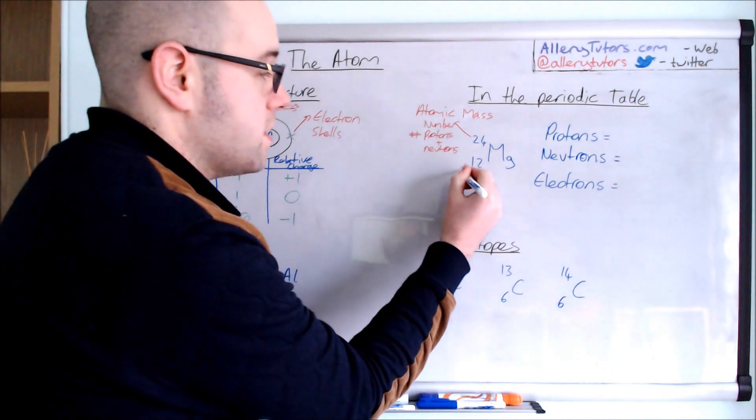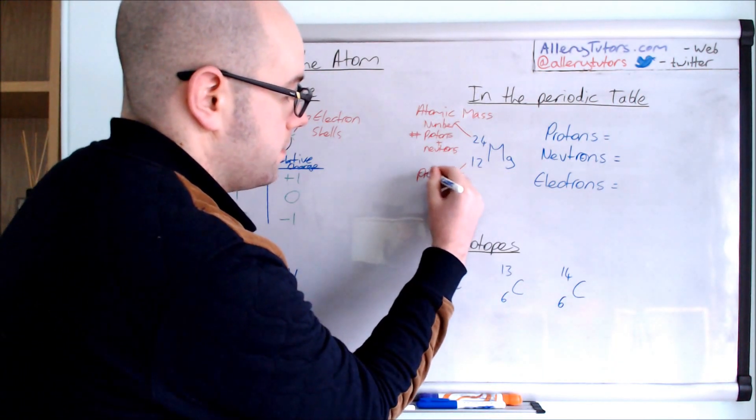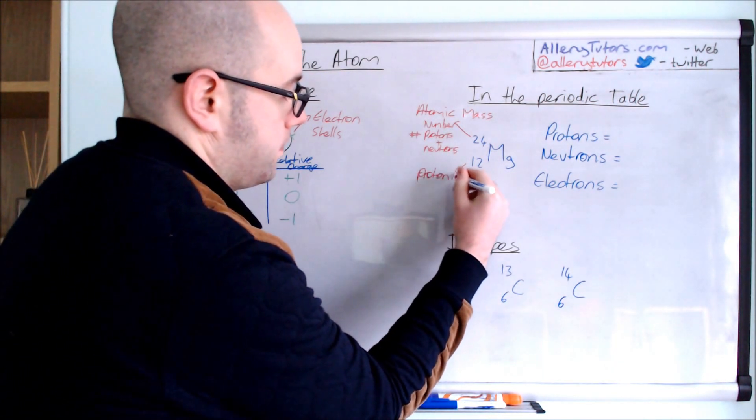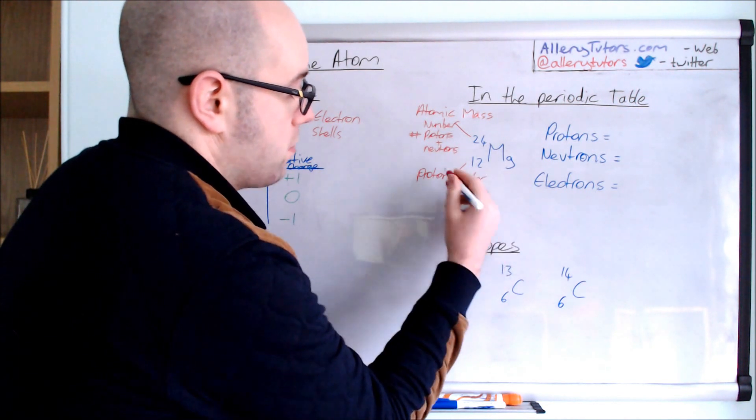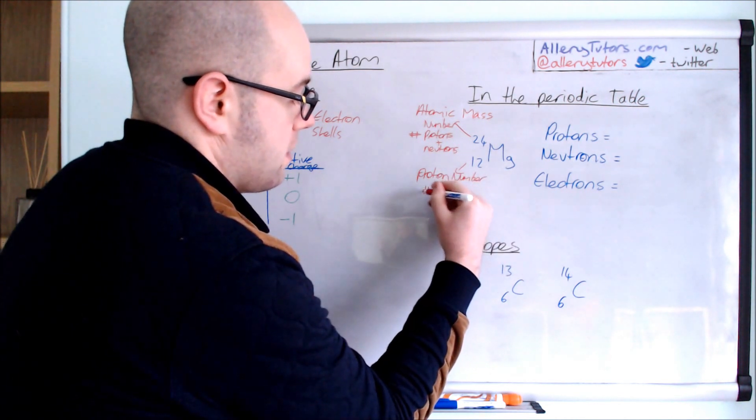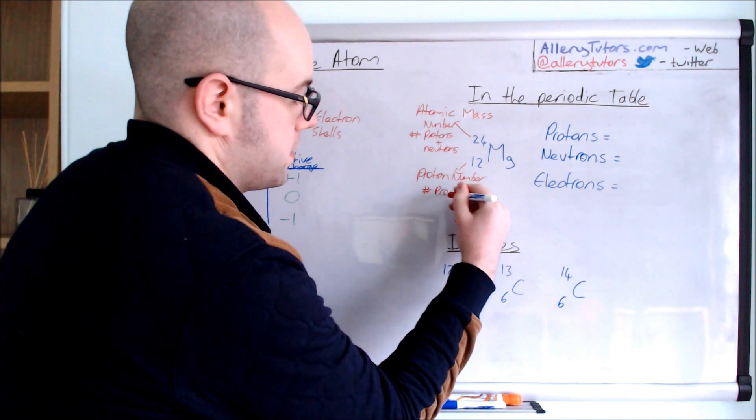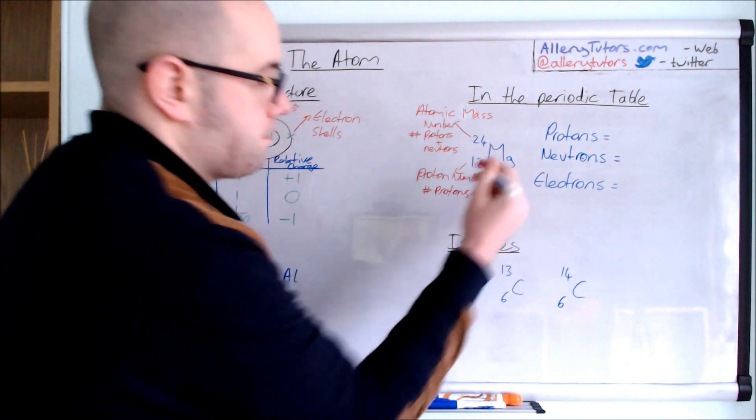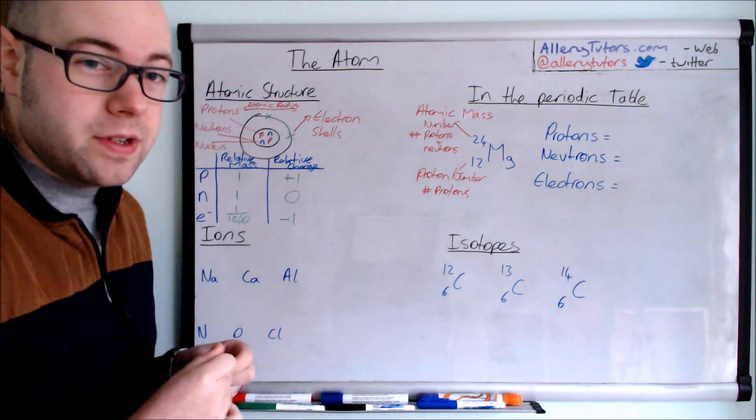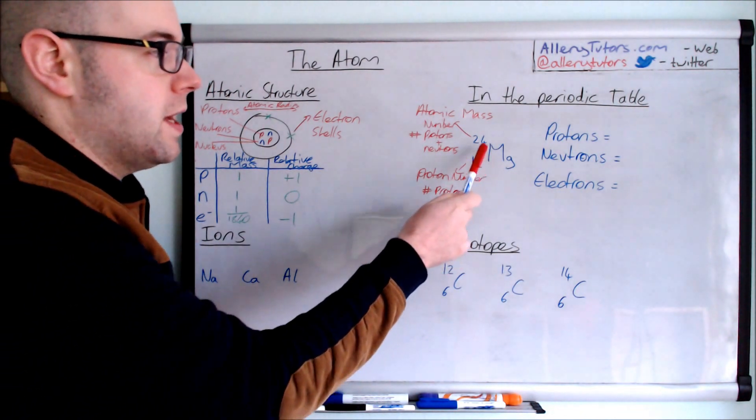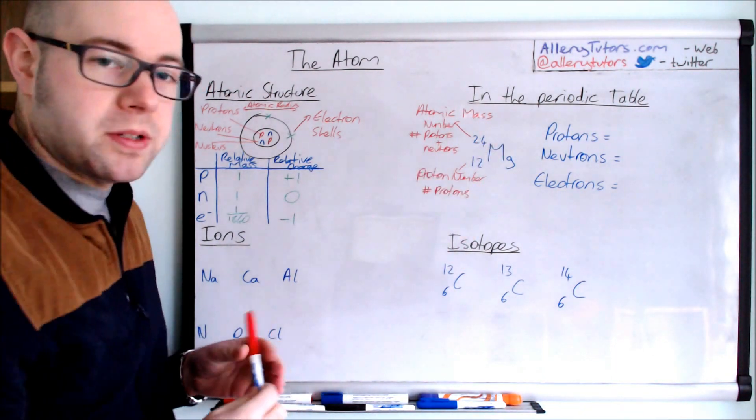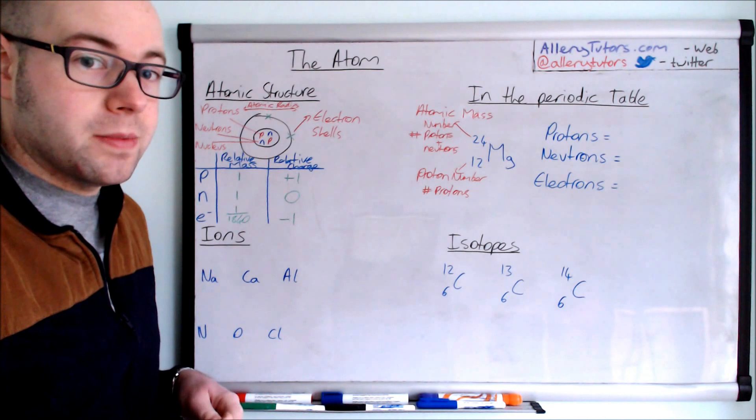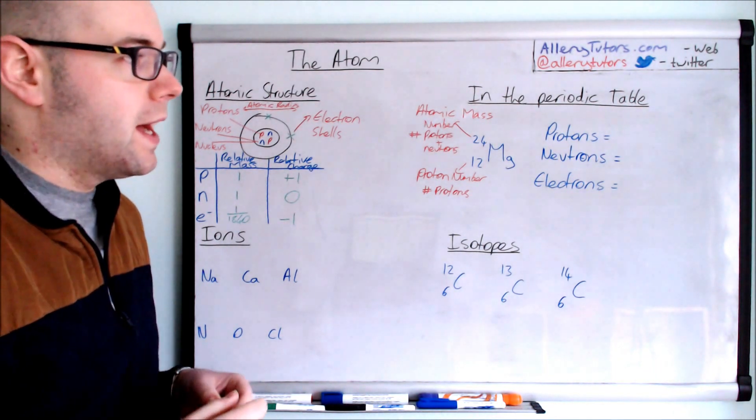We then have this one. This is called the proton number. And the proton number, no surprise, tells us about the number of protons. And to work out the number of neutrons, all you do is you subtract the top number away from the bottom number. And you should find out the number of neutrons in your atom.